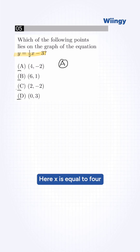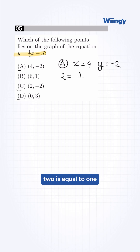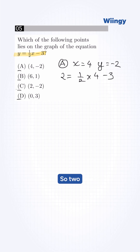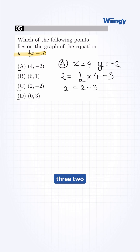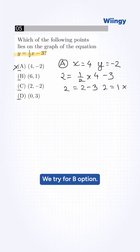Start with option A. Here x is equal to 4 and y is equal to minus 2. We substitute this into our equation: 2 is equal to 1/2 times 4 minus 3, so 2 is equal to 2 minus 3, which gives 2 is equal to 1. This is not correct, so we eliminate option A.